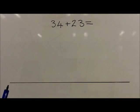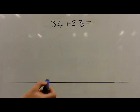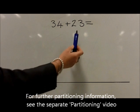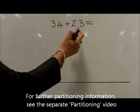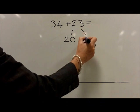For this question, they start with the larger number, 34, placing this on the left hand side of their number line. They then partition the 23 into 20 and 3.